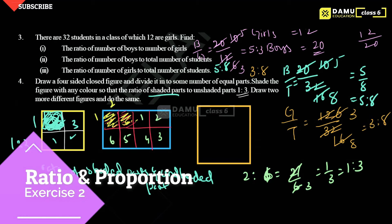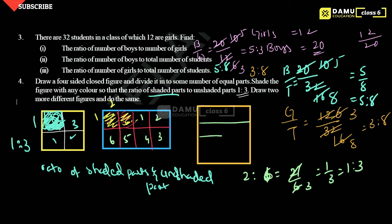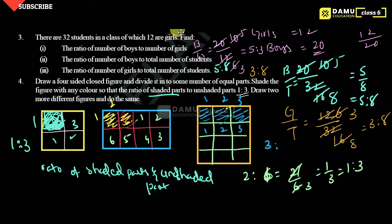Then again divide into 4 equal parts — 1, 2, 3, 4 — and shade 3 parts. Shaded parts: 1, 2, 3. Total unshaded: 1, 2, 3, 4, 5, 6, 7, 8, 9 — so 9 total unshaded. Ratio is 3:9. Three ones are 3, three 3s are 9, so that also simplifies to 1:3.